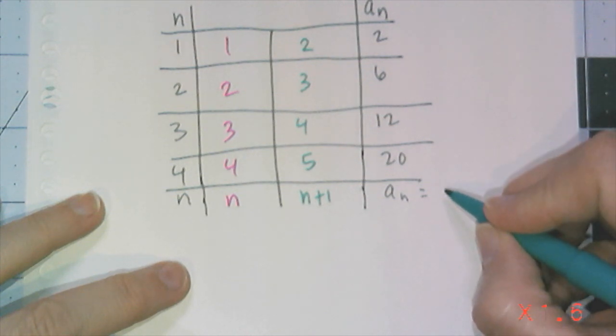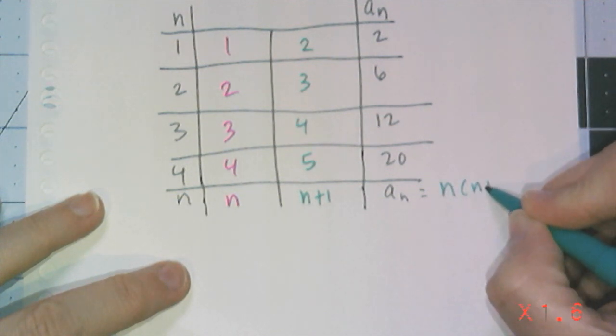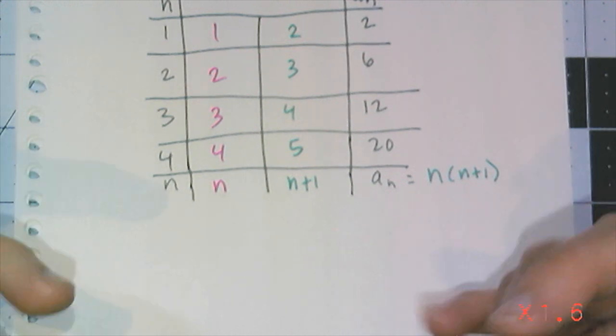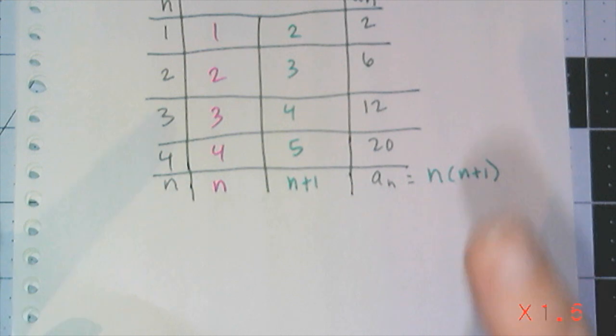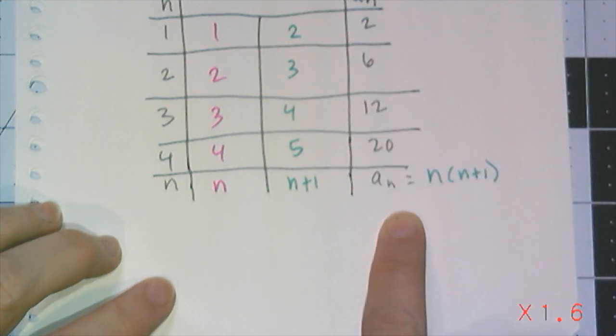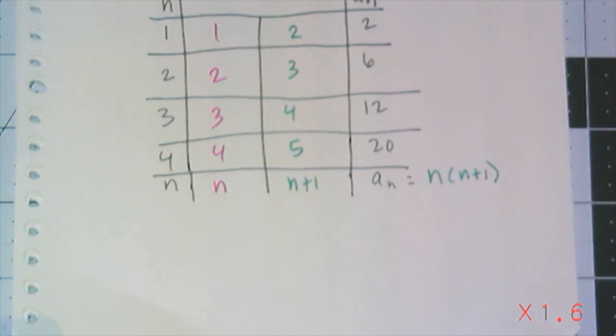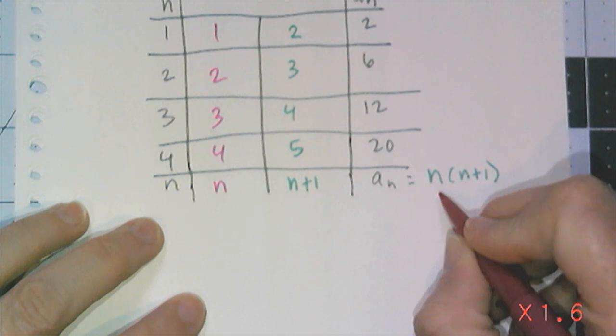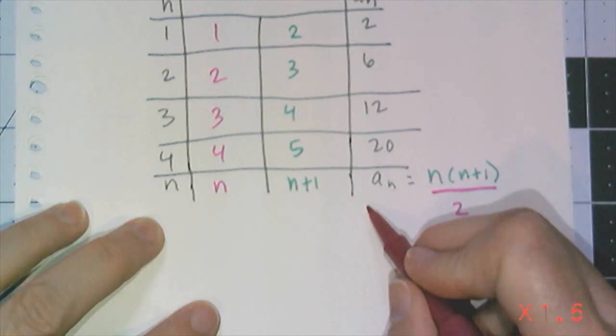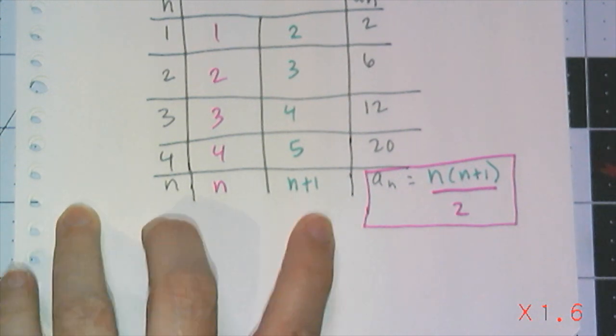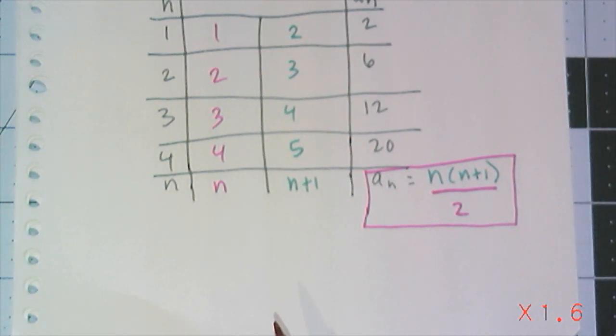But that's not the answer to the actual question I asked, because the actual sequence I need is half of this. And so if I have the rule for this sequence, and I want half of it, then I take the rule and I divide it by 2. So this just happens to be the formula that generates all of the triangular numbers.